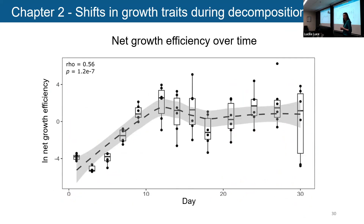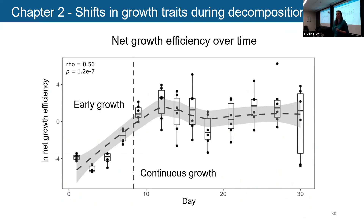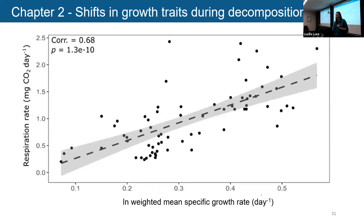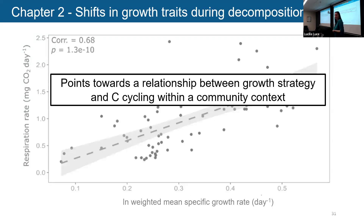Looking at this data over time, we see an increase in growth efficiencies and then a plateau at around day 12 — which is where that shift from early to continuous growth started to happen. There seems to be a relationship between these growth traits and what's happening to the carbon. When I looked at the weighted mean growth rates of a community and compared that to the respiration rate at a given point in time, there was a strong positive correlation: if a community had, on average, faster growth, it tended to be respiring more carbon. The takeaway is that this points towards a relationship between the growth strategies in a community and the carbon cycling happening within it.